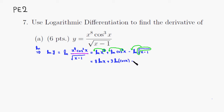Then we subtract one-half times the natural log of x minus 1. So we've rewritten the equation using log properties, and now we're ready to take the derivative.